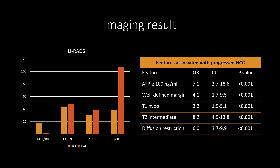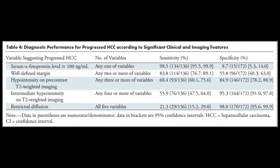Among the multiple clinical and imaging features studied, five were found to be significant on multivariate analysis: AFP greater than 100, well-defined margin, T1 hypointensity, T2 intermediate signal, and diffusion restriction. When three or more of these features are used as the diagnostic threshold for progressed HCC, sensitivity and specificity are approximately 69% and 85%, respectively. Using four or more variables yields 56% and 95%, and using all five variables yields nearly 100% specificity.